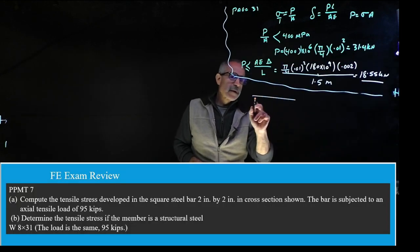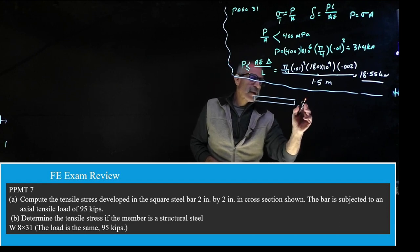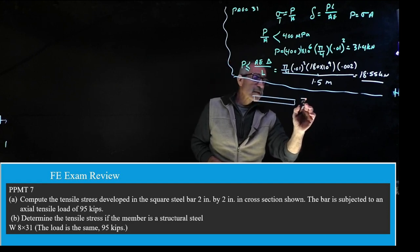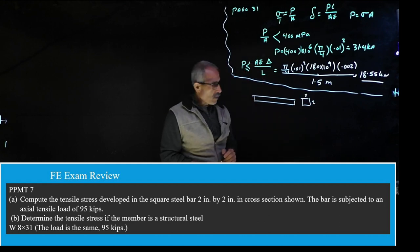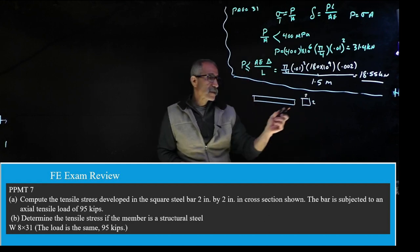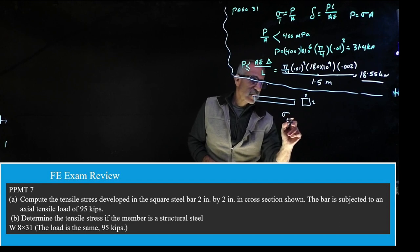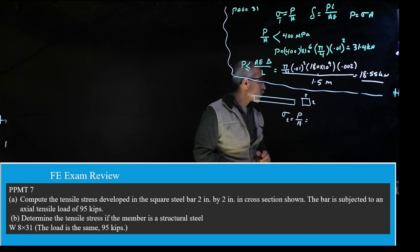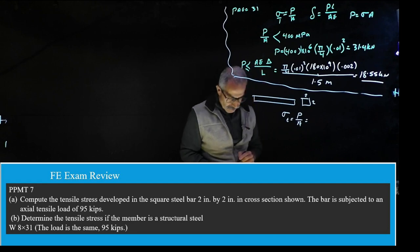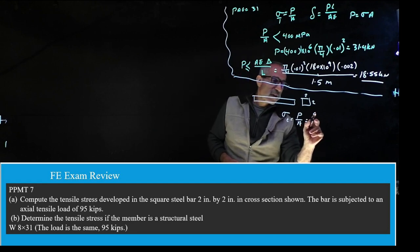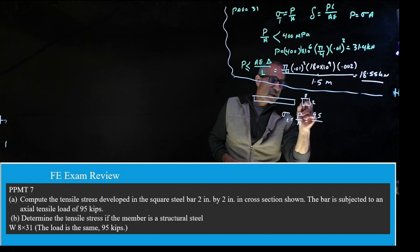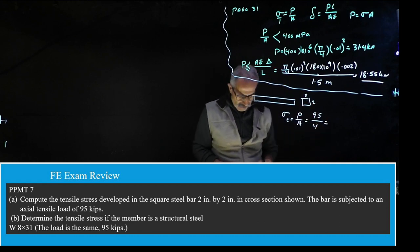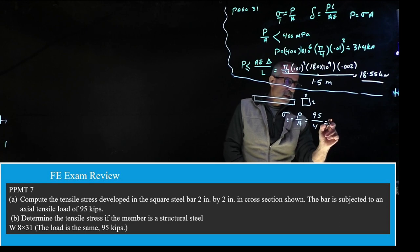Next problem: a bar with a 2 by 2 inch cross section has 95 kips applied. The tensile stress equals P divided by A. The cross-sectional area is 2 times 2 equals 4 inch². So the stress is 95 divided by 4 equals 23.8 ksi.